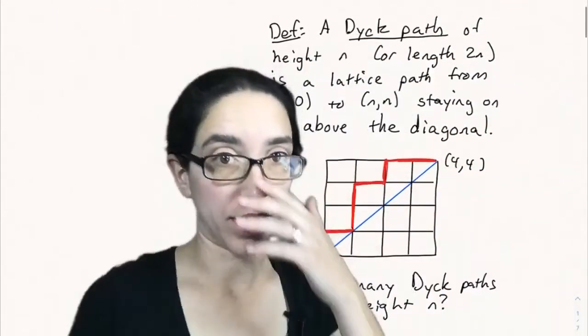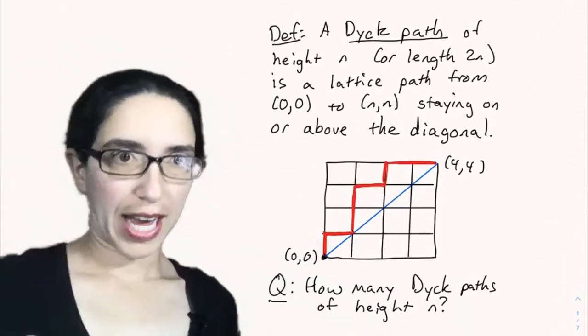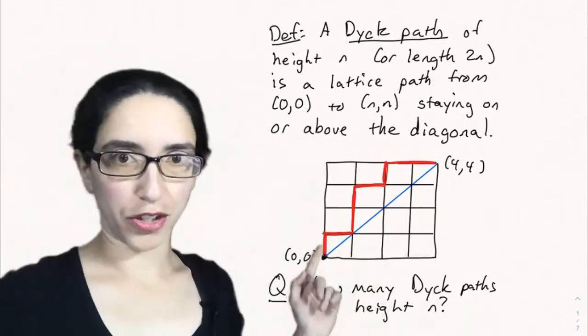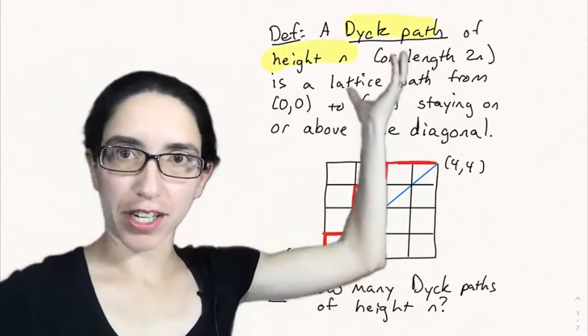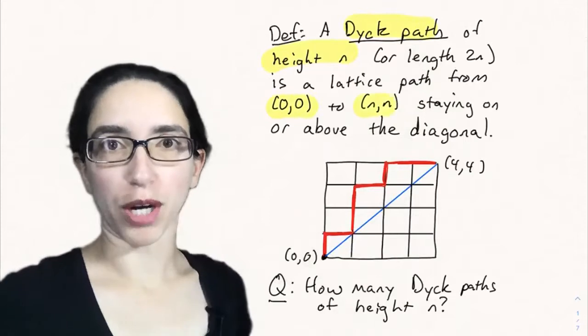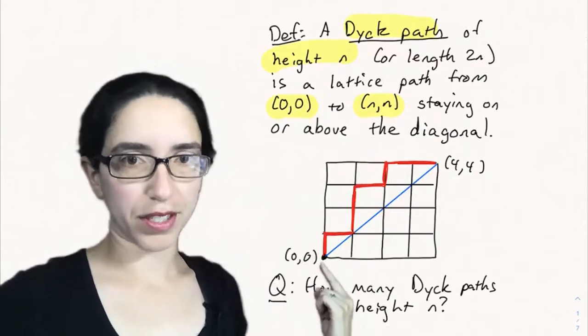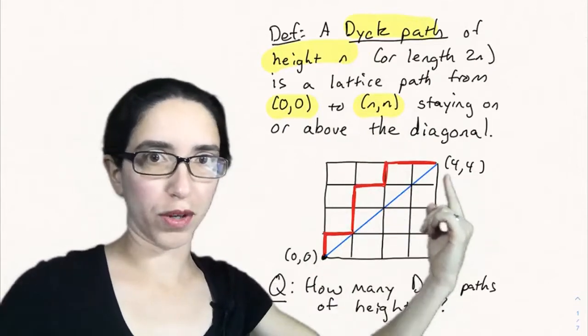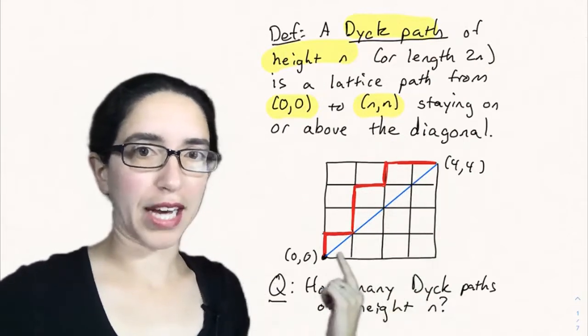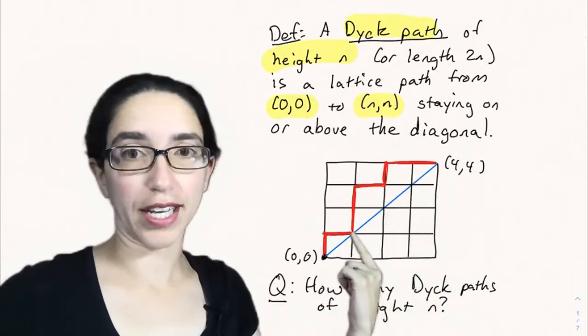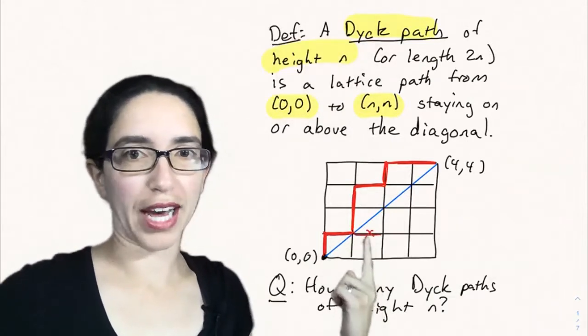Let's see one place where these numbers come up. A Dyck path of height n or length 2n is a lattice path from (0,0) in the plane to (n,n), where you take unit steps up or right such that the path always stays above the diagonal. It can hit the diagonal like at (0,0) or at (1,1), but otherwise it never goes below the diagonal.